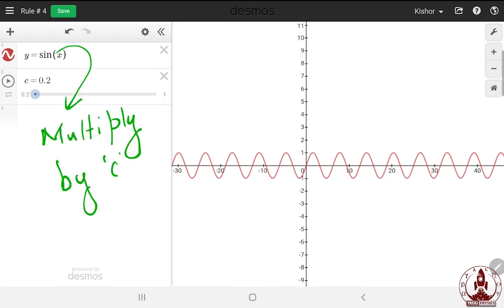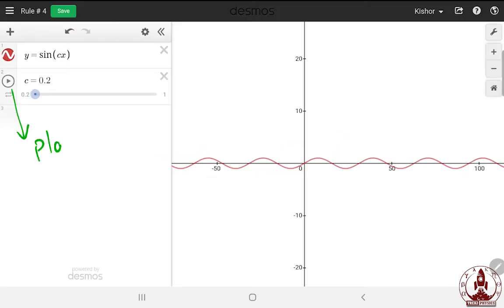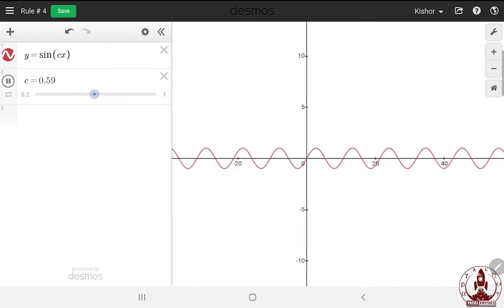I know what you are thinking now. Multiplying a constant to X instead of Y. Well, that is rule number four. Let's see it directly into an action. It stretch and squeeze my function in horizontal direction.